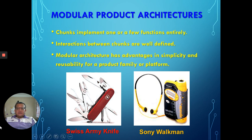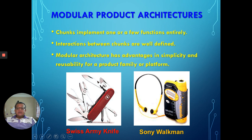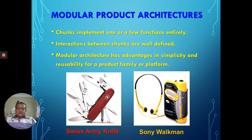In one single Swiss Army knife, it has many tools: a knife, pliers, scissors, a bottle opener, and a puncher. Each chunk has its own single function — the knife cuts, the pliers hold, the scissors cut — each has its own function independently.